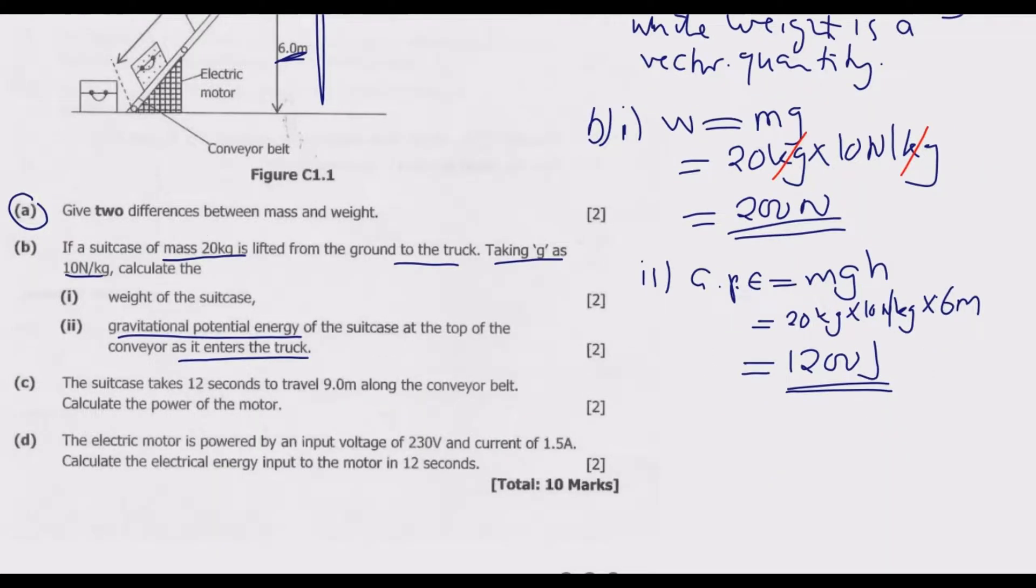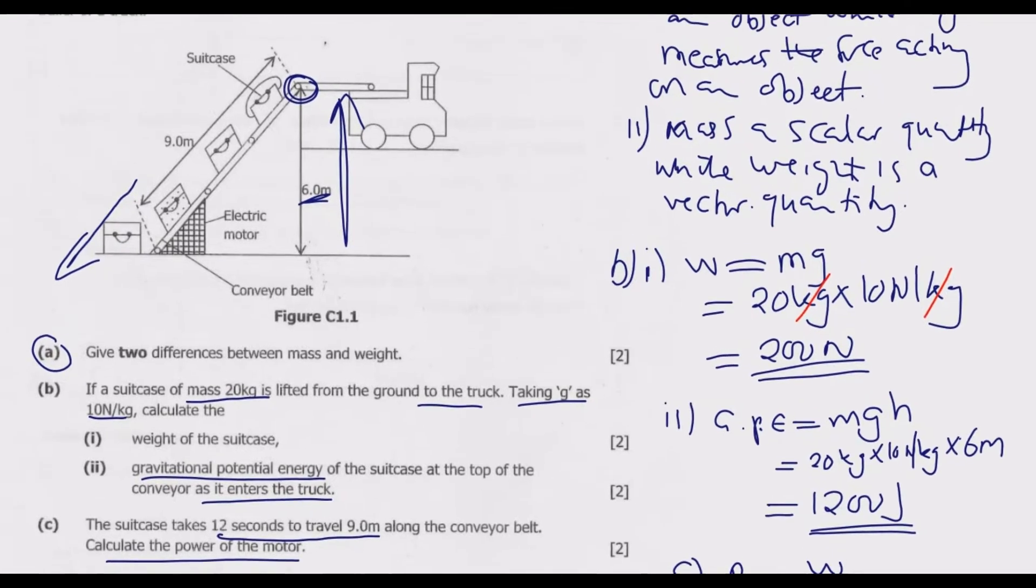Question C: The suitcase takes 12 seconds to travel 9 meters along the conveyor belt. Calculate the power of the motor. Power is given by work done over time. We need to find work done first. We know time is given, but we need to find work done. Work done is force times distance, and this distance should be the distance moved in the direction of the force.